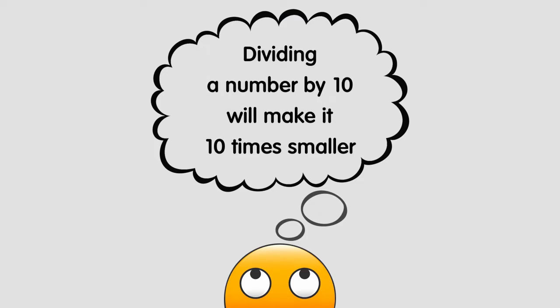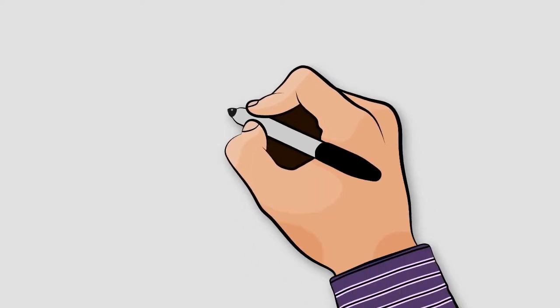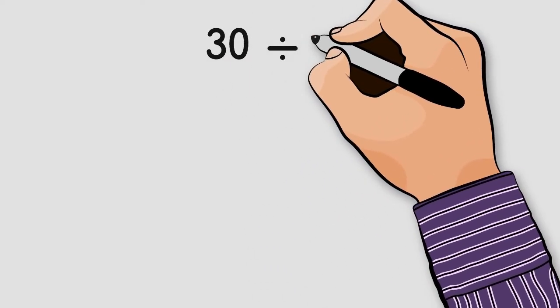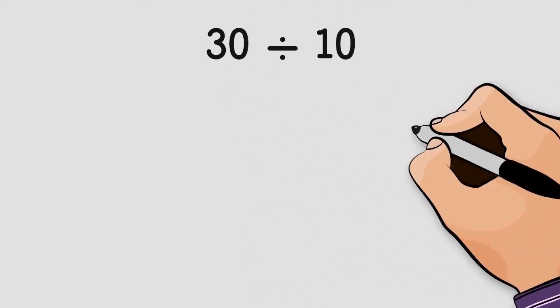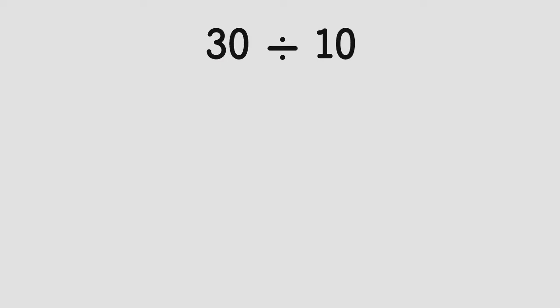Dividing a number by 10 will make it 10 times smaller. For example, let's say something like 30 divided by 10. One way to think about this is we are taking the number 30 and we are dividing it into groups of 10, so let's see how many groups of 10 it takes to make 30.